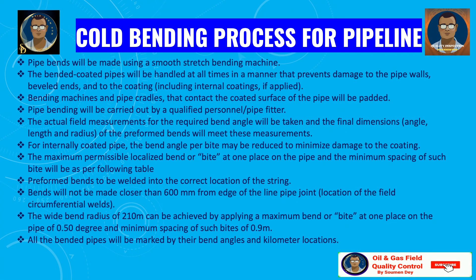The cold bending process for pipeline: Pipe bends will be made using a smooth stretch bending machine. Bent coated pipes will be handled at all times in a manner that prevents damage to the pipe walls, bevel ends, and the coating, including internal coating if applied. Bending machines and pipe cradles that contact coated surfaces of the pipe will be padded. Pipe bending will be carried out by qualified personnel or a pipe fitter. The actual field measurements for the required bend angle will be taken, and the final dimensions — angle, length, and radius of the preformed bends — will meet these measurements. For internally coated pipe, the bend angle per bite may be reduced to minimize damage to the coating.